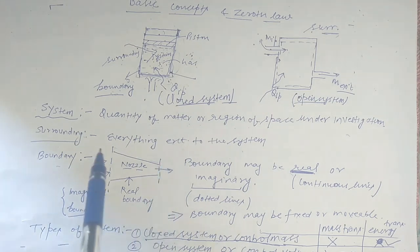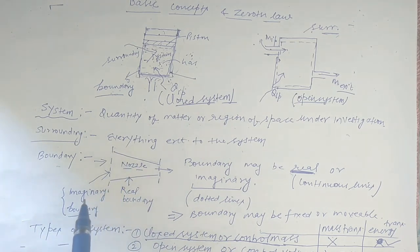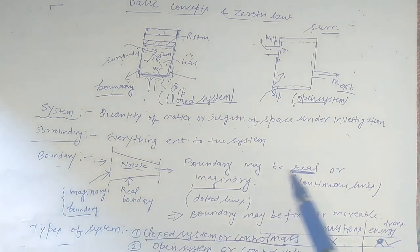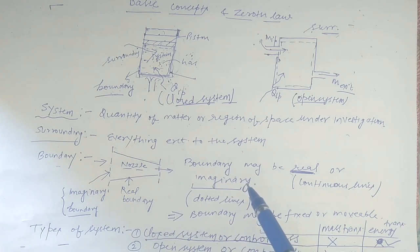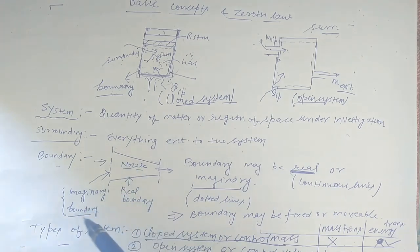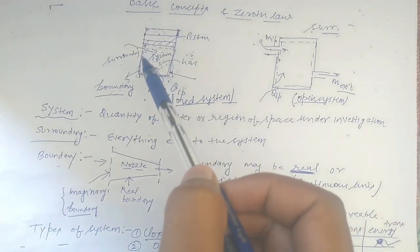So this dotted line is basically an imaginary boundary. Continuous lines are used for real boundaries. So a boundary can be real or imaginary. Here, in this piston-cylinder arrangement, where there is no actual wall, we use an imaginary boundary for study purposes.